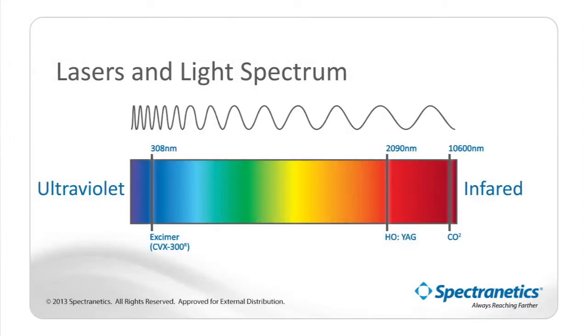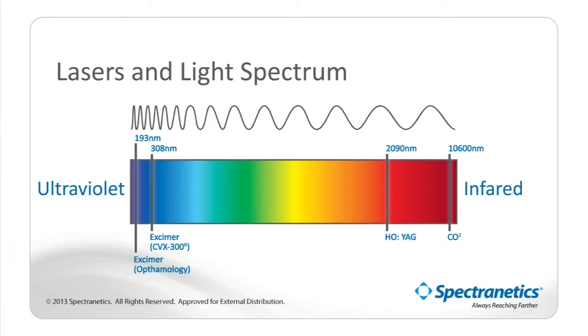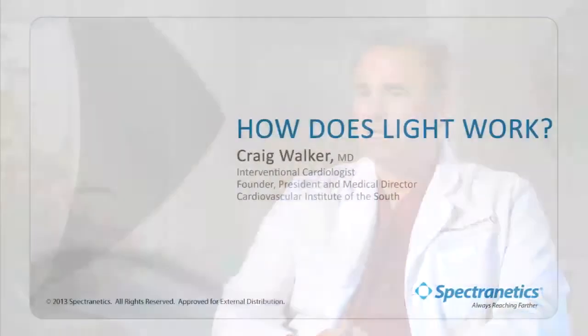I've shown two ultraviolet lasers here. I show 308 nanometer, which is the laser that we use when we're performing atherectomy in blood vessels. I also show 193 nanometer. That is a xenon fluoride laser, and that is a laser which is typically used for LASIK surgery on the eye.